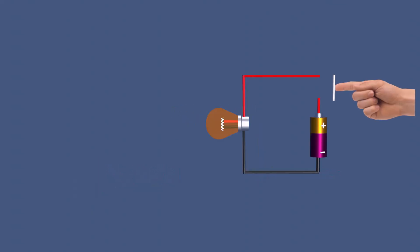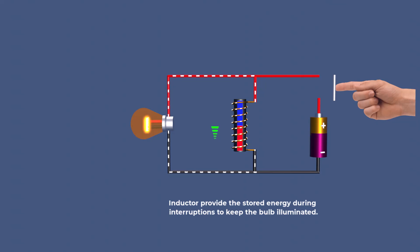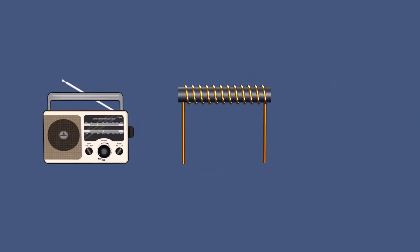For example, if we switch a light bulb on and off rapidly without an inductor, the light will flash. If we connect an inductor into the circuit, the bulb will remain illuminated during the interruptions.